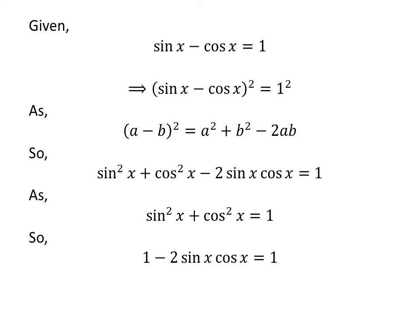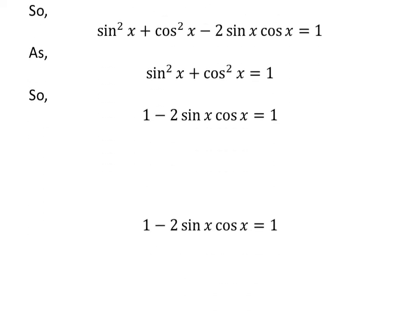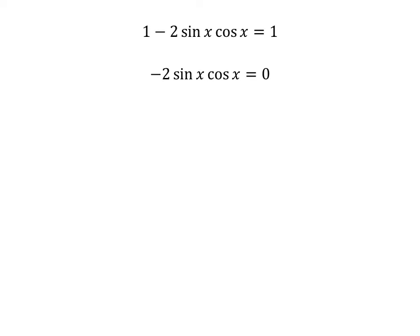Application of the above trigonometry identity gives us: 1 minus 2 times sin of x times cosine of x is equal to 1. Cancelling out the 1 on both sides gives us minus 2 times sin of x times cosine of x is equal to 0. Since minus of 0 is 0, so 2 times sin of x times cosine of x is equal to 0.